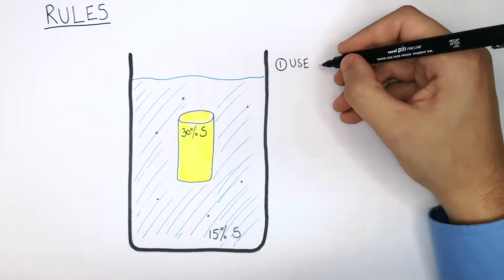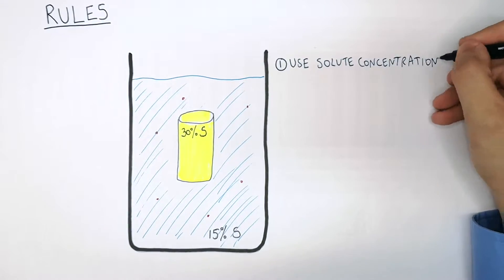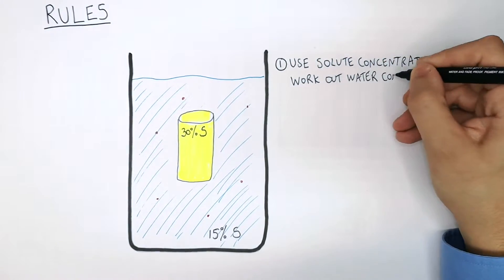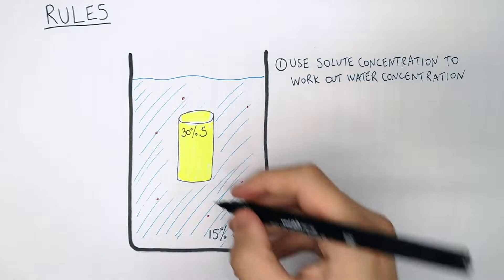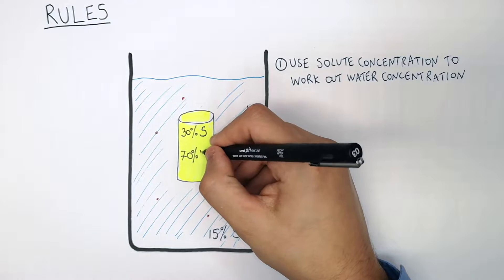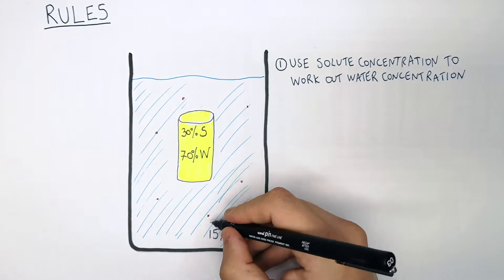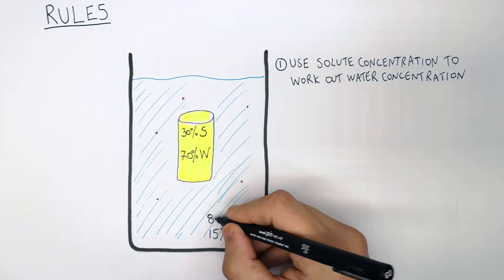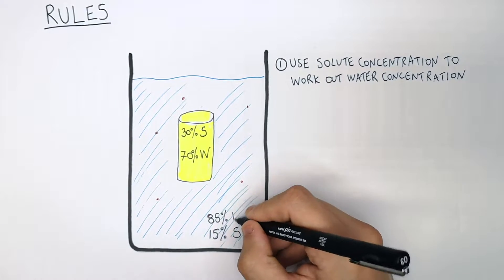Rule one is use solute concentration to work out the water concentration. So in the potato it's 30% sugar, so the water concentration is 70% water. In the beaker it's 15% sugar, so that means it's going to be 85% water.